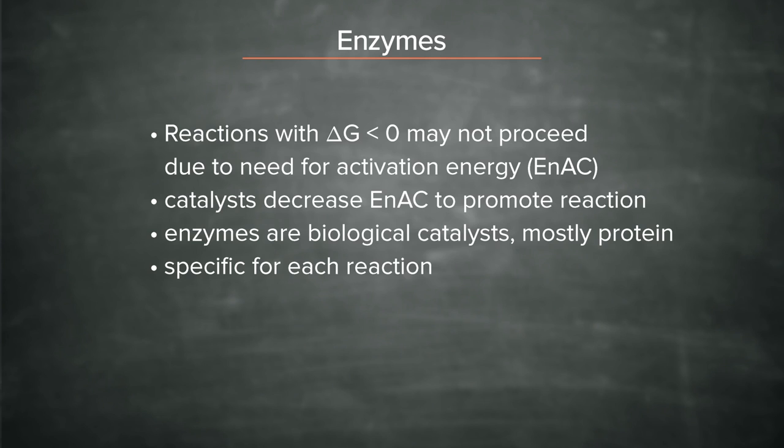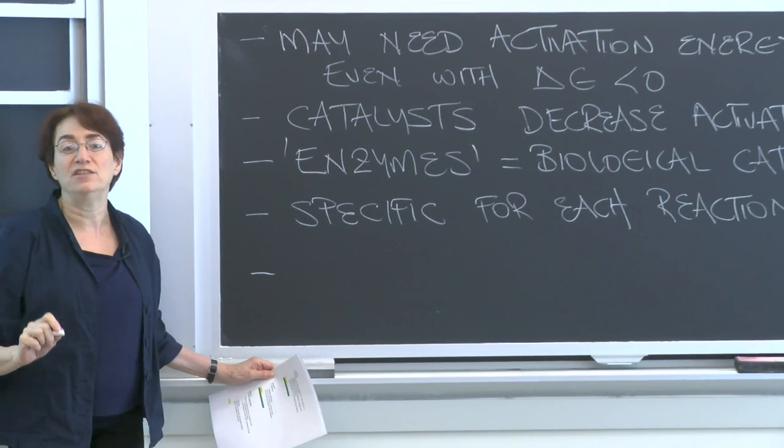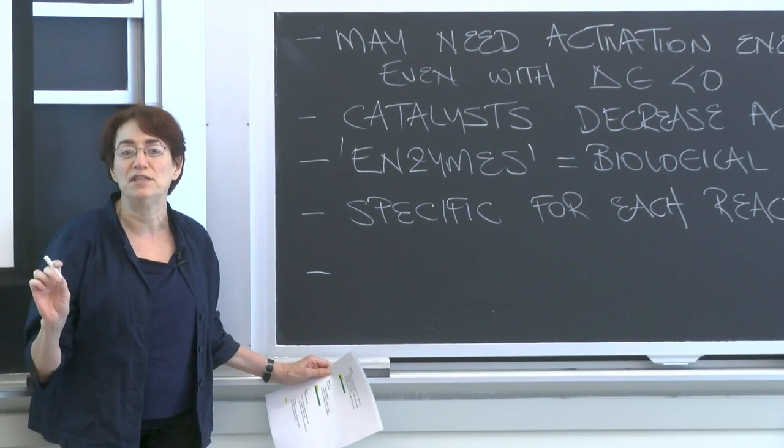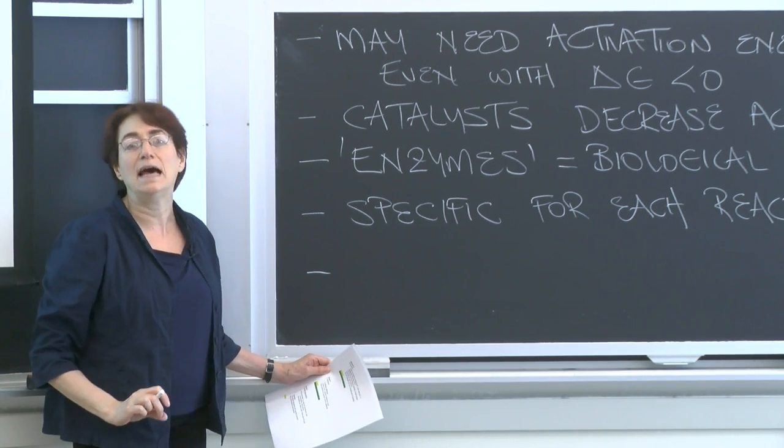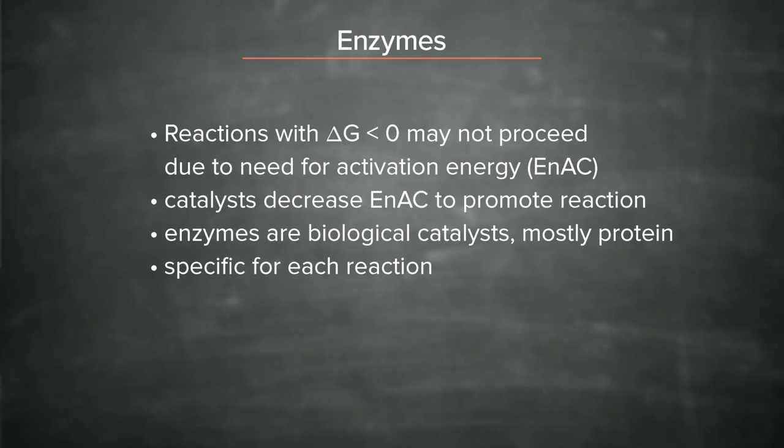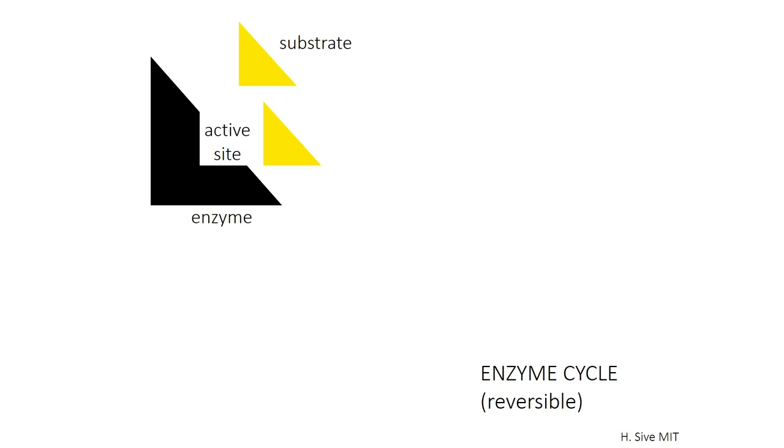So we can write that enzymes are specific for each chemical reaction, each metabolic process in the cell. And key to this is that they do not change the value of delta G. They rather speed up the rate of the reaction. So they do not change delta G, but speed up reaction rate, how fast it goes.